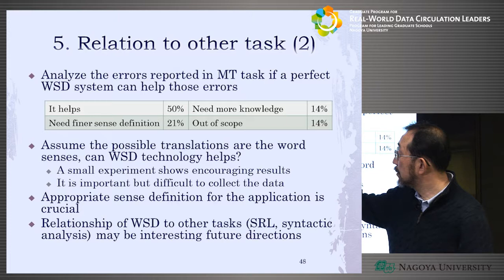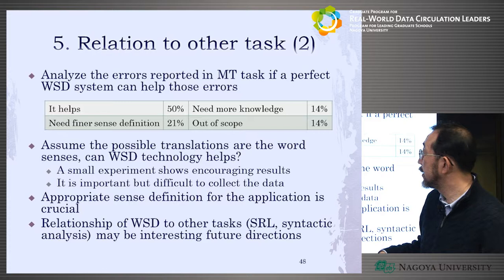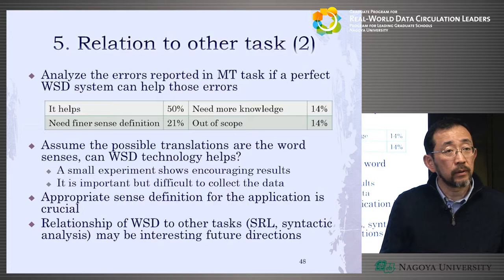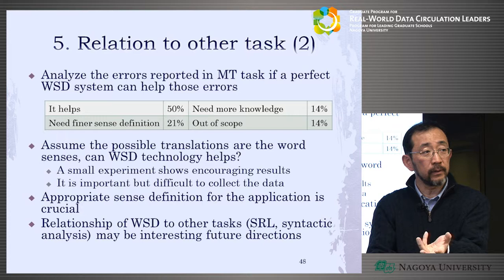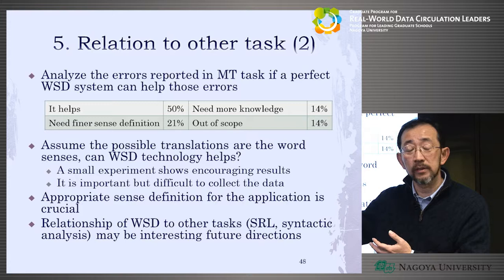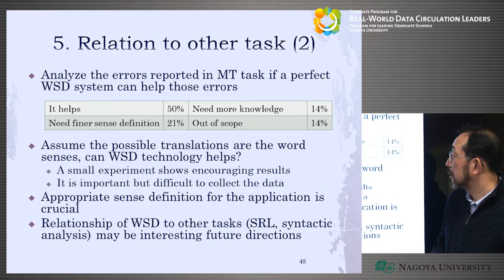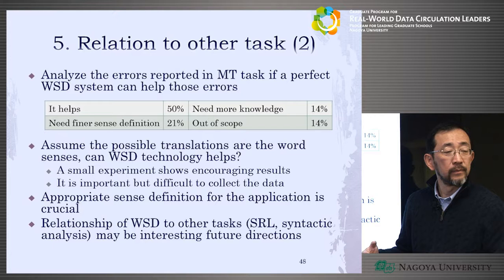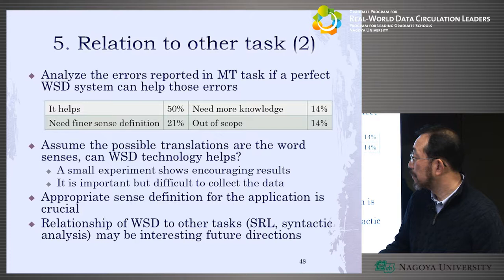Based on this finding, what they tried is defining word sense based on translation: assuming the possible translations are the word senses. Only when the translated words are different do they define these as different senses. That's very natural for machine translation researchers. A small experiment shows encouraging results, though it is important but difficult to collect the correct data — they have to create this kind of dictionary from scratch. Appropriate sense definition for the application is crucial.